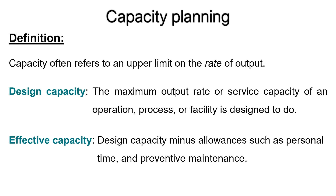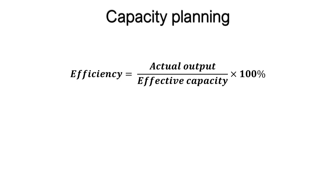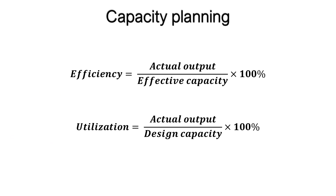These different measures of capacity are useful in defining two measures of system effectiveness: efficiency and utilization. Efficiency is the ratio of actual output to effective capacity, and utilization is the ratio of actual output to design capacity. Both measures are expressed as percentages.